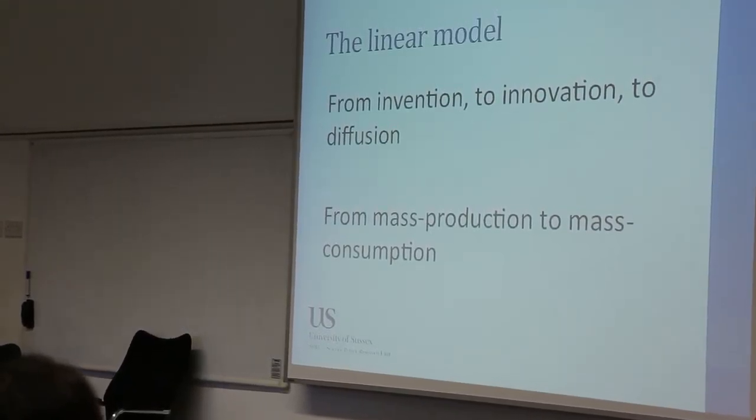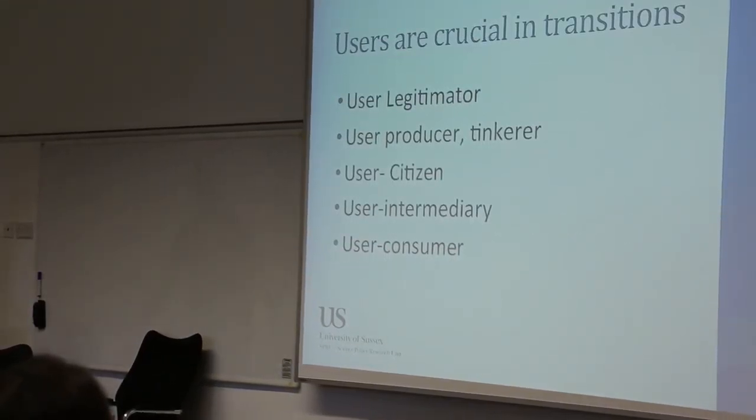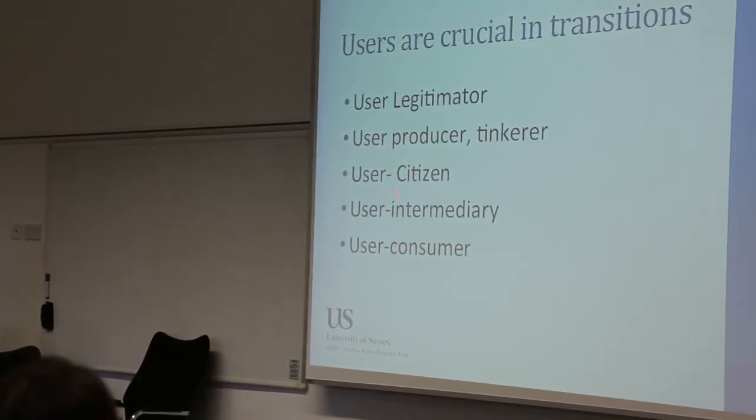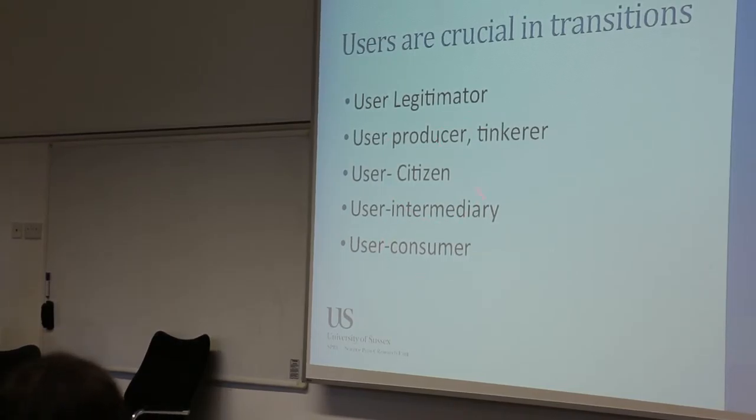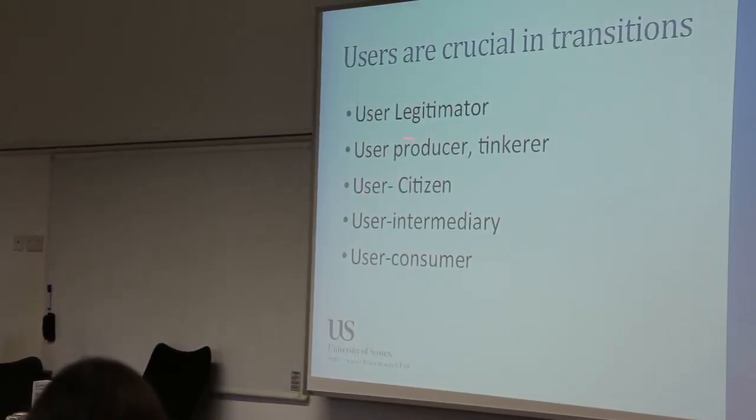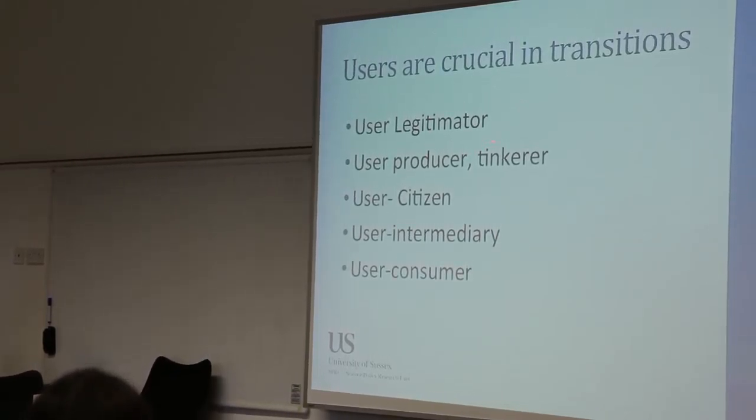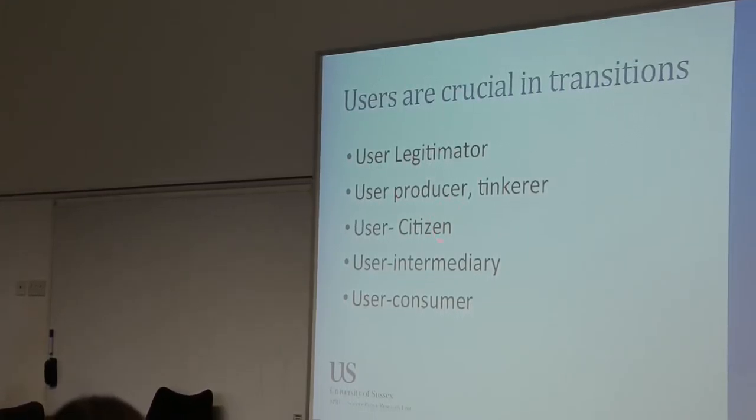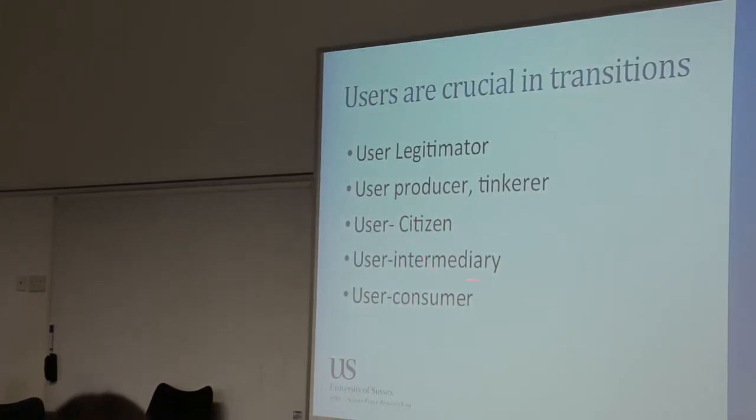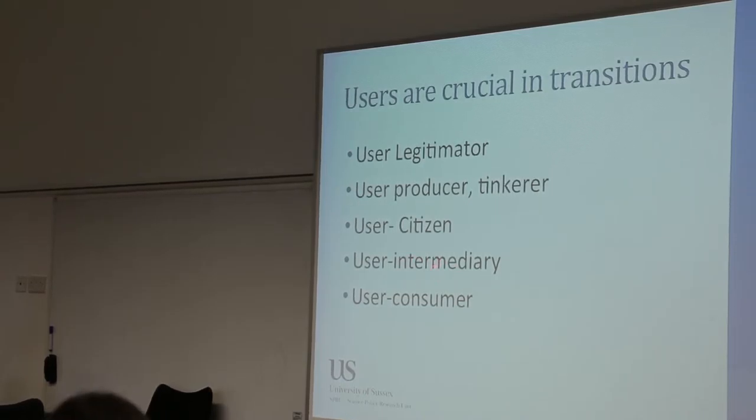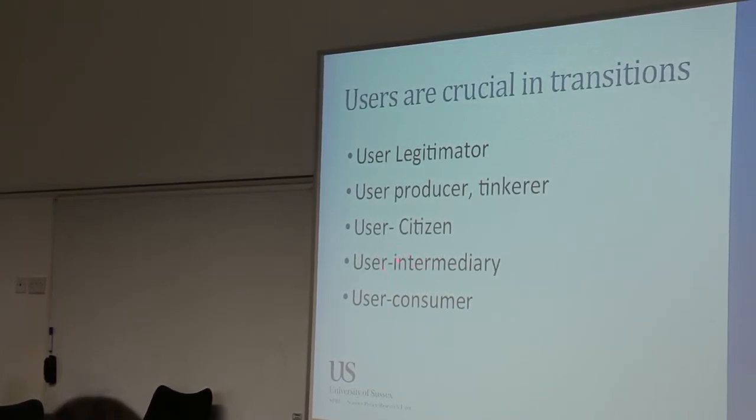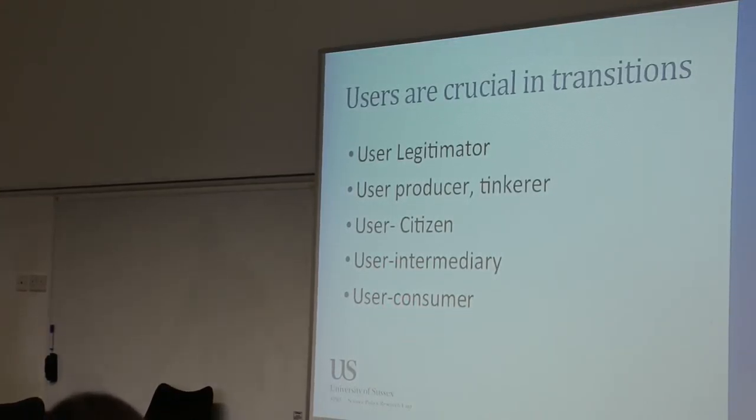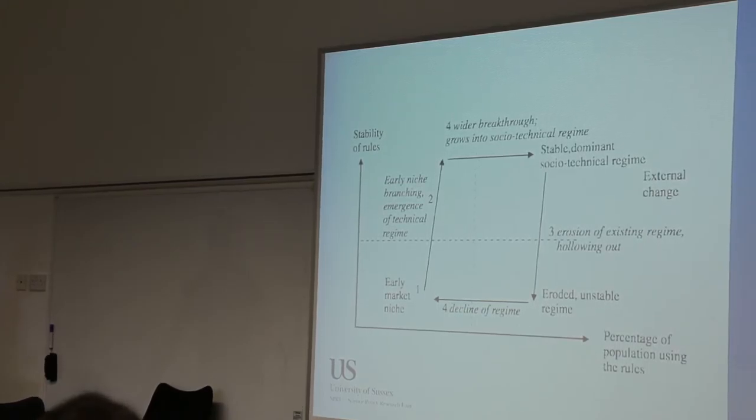This story about from mass production and mass consumption is also connected to the linear model. So in the paper I'm developing, there are five types of user roles during the transition. One is providing legitimation for the transition. The other is producing it and tinkering with it. The other is lobbying for it. Acting as the intermediary means bringing production and consumption together. And then we have the user as consumer, the kind of traditional role often assumed in the literature.